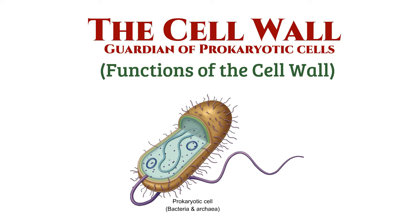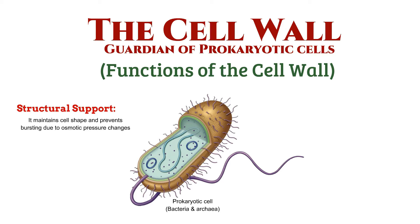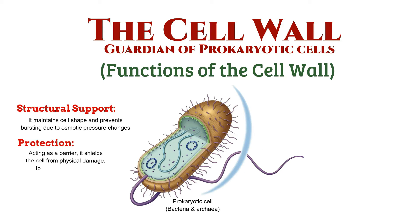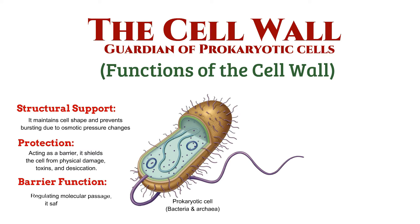The cell wall serves several vital functions. It maintains cell shape and prevents bursting due to osmotic pressure changes. Acting as a barrier, it shields the cell from physical damage, toxins, and desiccation. Regulating molecular passage, it safeguards the cell from foreign substances.